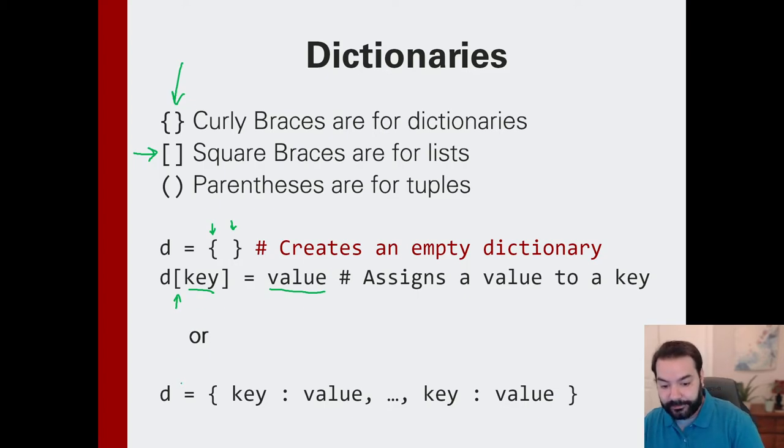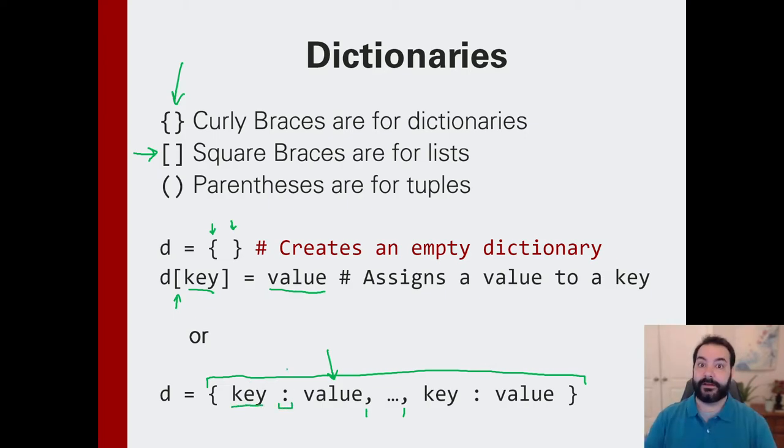You can also build it sort of statically where you just put all the values in when you're creating the dictionary, just like we can with a list. They all get separated by nice little commas. But the big difference here is that it's not just the entry. It's not just whatever element you want, but you can see that you specify the key and a little colon to say, here's the entry for this.